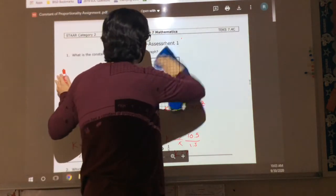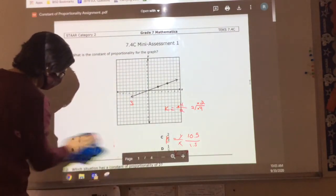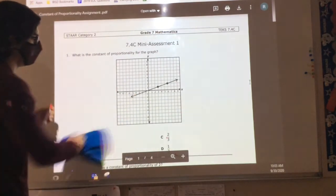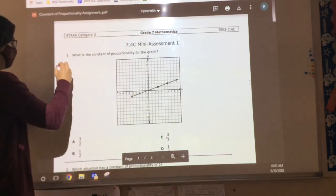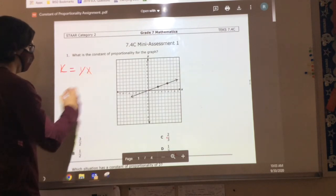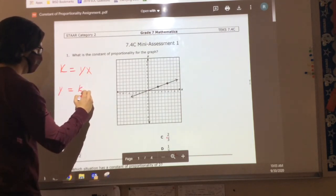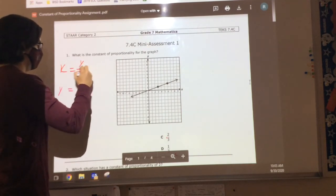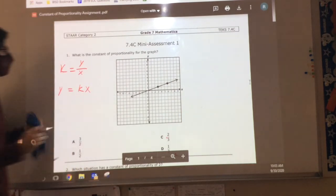All right. So on your homework assignment that I'm going to put for you, I want you to write down these two equations to make sure that you understand exactly what you're doing. I want you to write down k equals yx. I don't want you to write that y equals k. I'm sorry. k equals y divided by x.